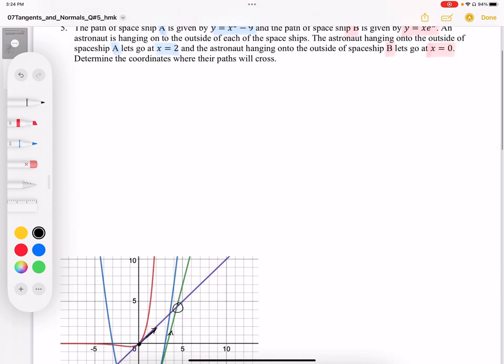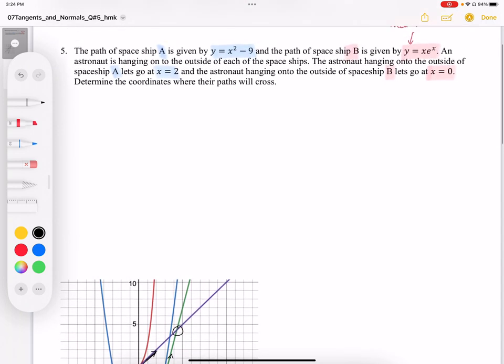So to do the problem, we need to first of all find the derivatives of each of these functions so that we can calculate the slope values. So I'm going to start off with spaceship A. So y prime of spaceship A, when I differentiate this, I'm going to end up with 2x, and the y prime for spaceship B, and this is where we need a rule to be able to differentiate this. We're using the product rule. If you don't know the product rule, we'll cover this a little bit later. So it's going to be 1 times e to the x plus x times the derivative of e to the x is e to the x.